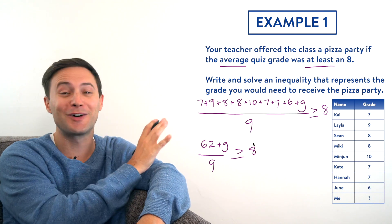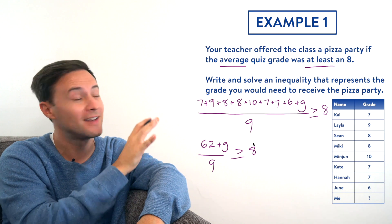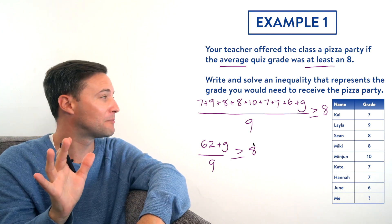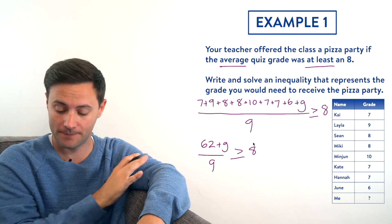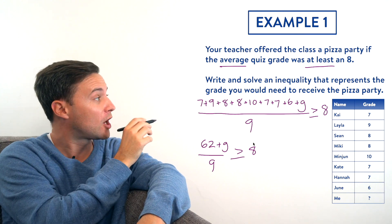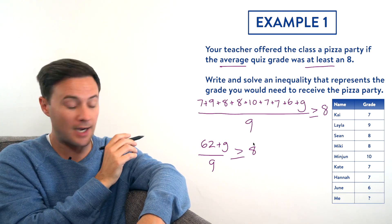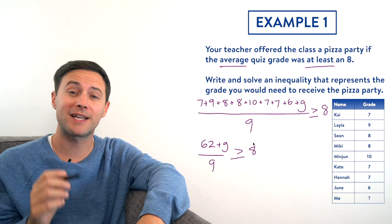After we've simplified the inequality, it looks way simpler, and now we're ready to solve. I'm trying to get G alone, which means I need to first multiply both sides by 9.